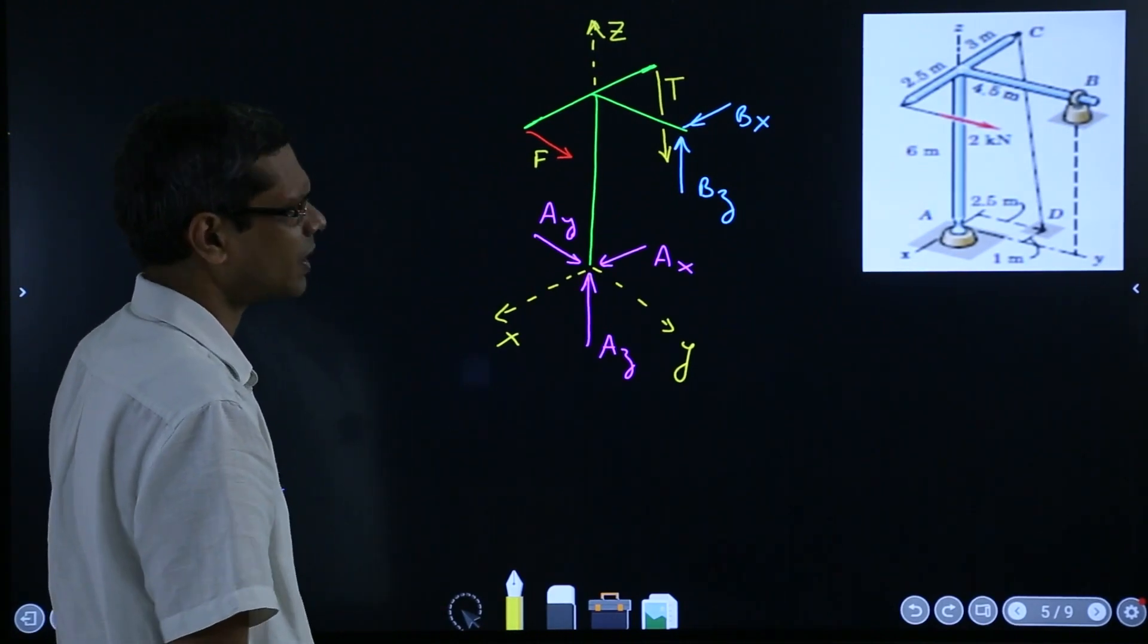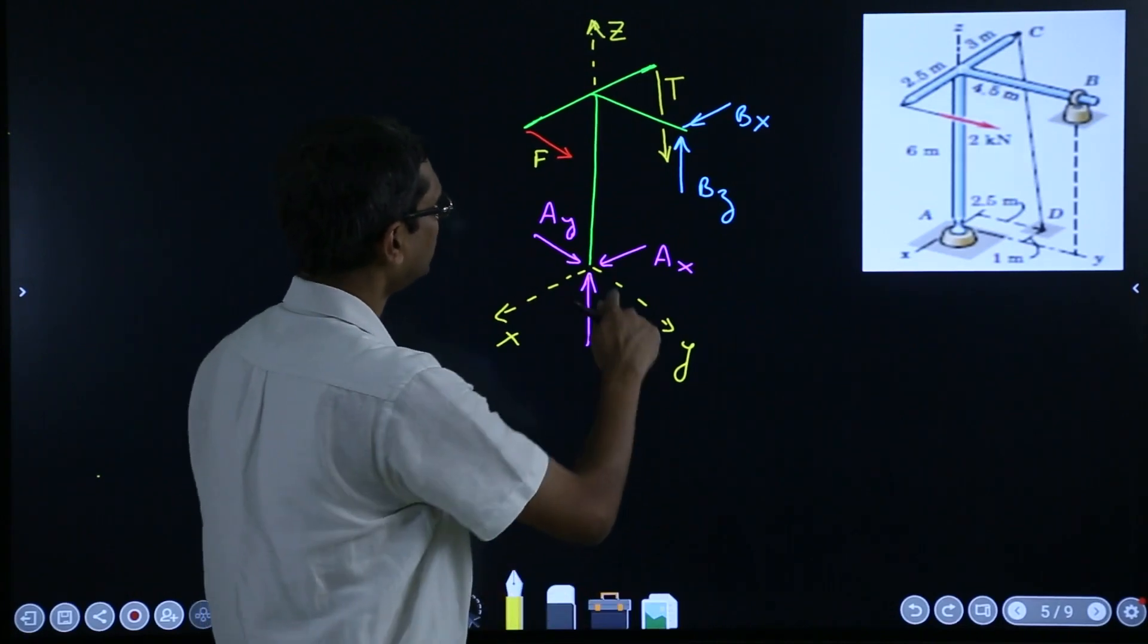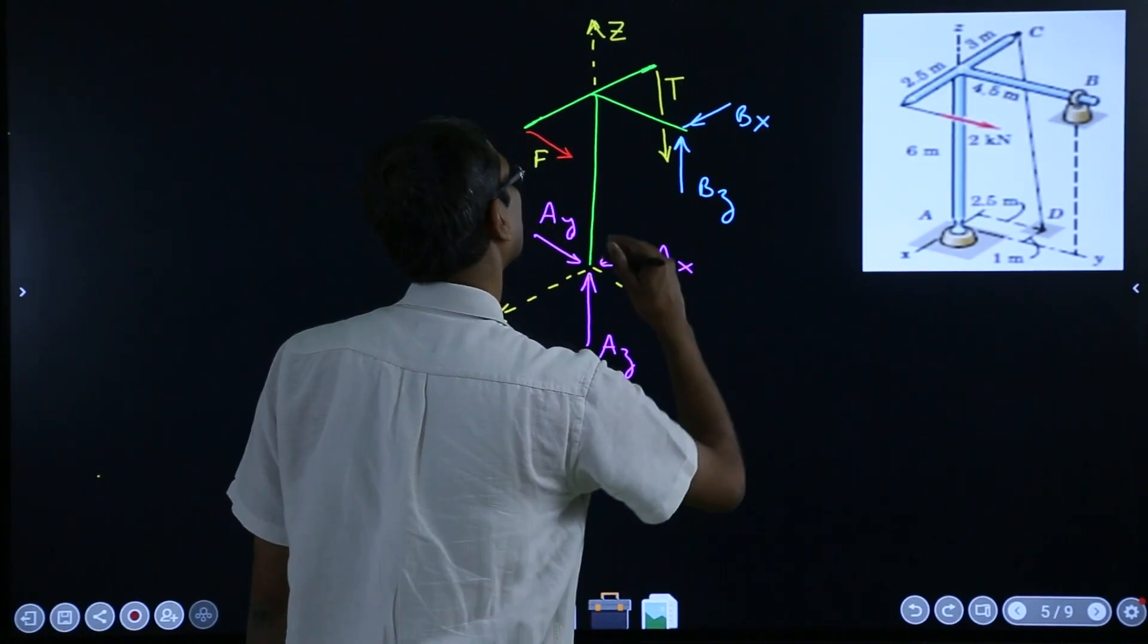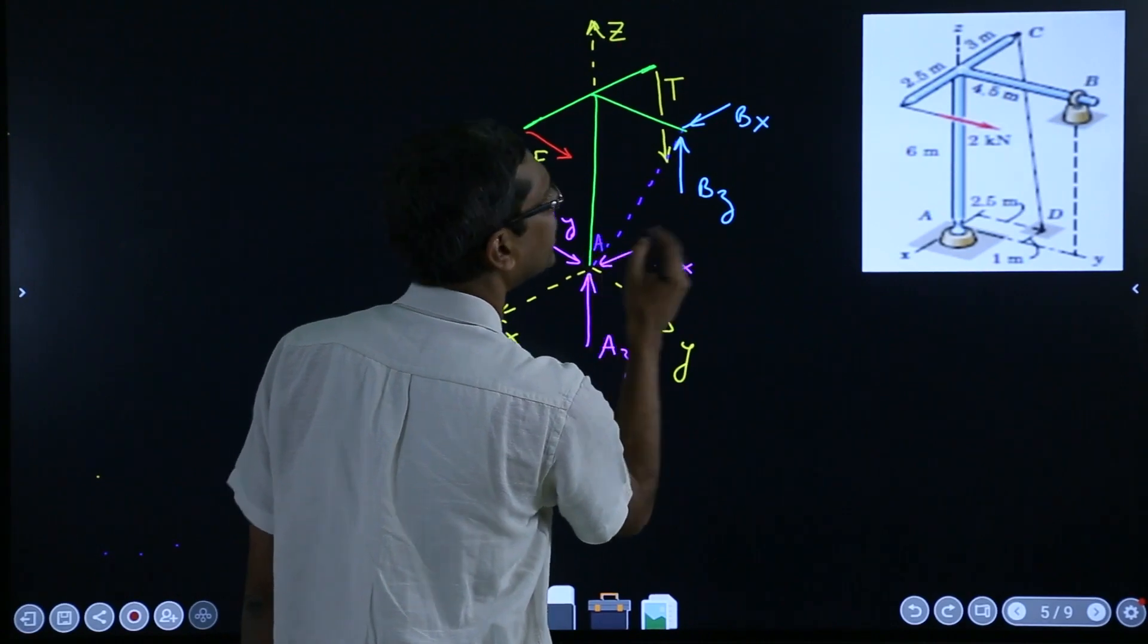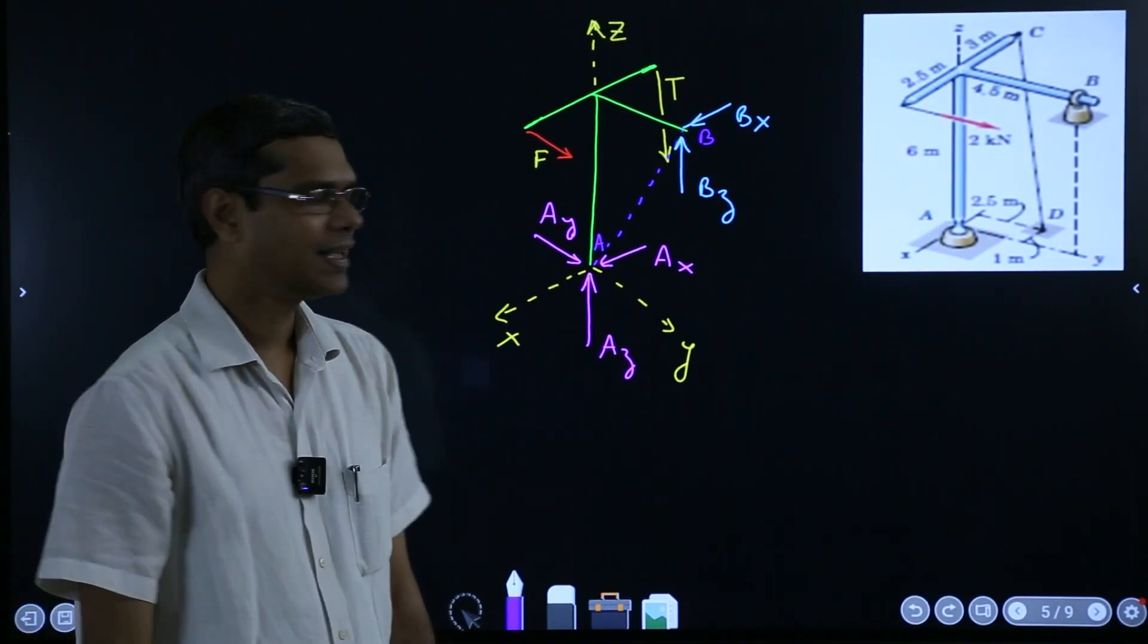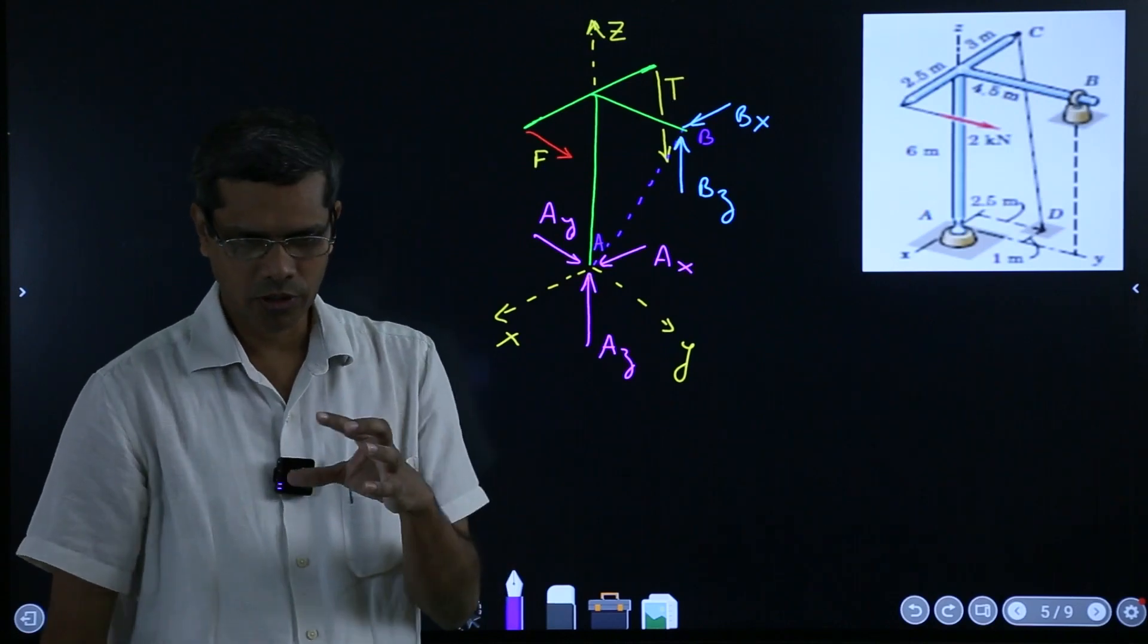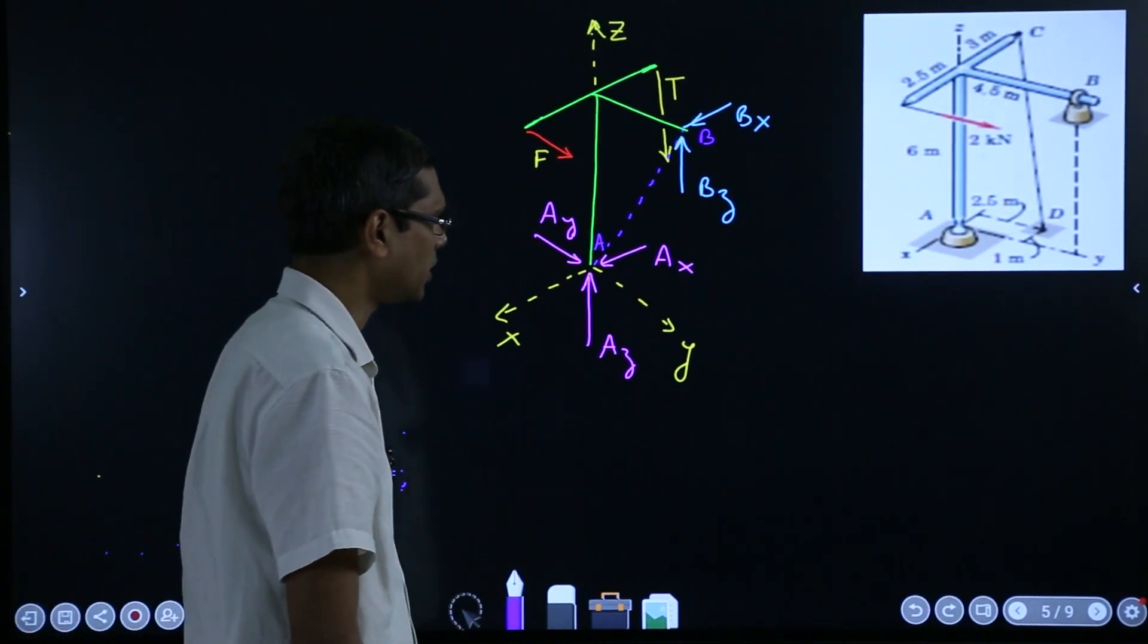So then the cleverest way is to take a moment about an axis which passes through these unknowns. For example, then all the components will just vanish. If I draw a line, for example, like this from here, so this is A to the point B. So the line AB, if I join and if I take a moment about that, then you see all these unknowns are gone. We don't have to bother about them. So that is the trick which you should learn from this problem. And whenever such, you should look for line segments which will eliminate most of the unknowns, as many as possible from your equation.